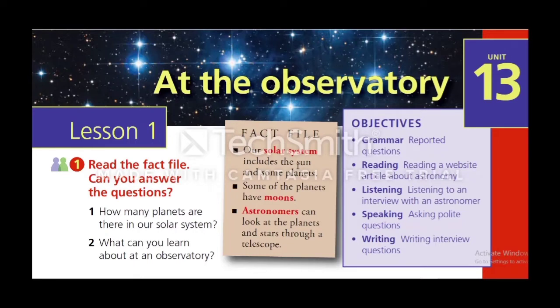The fact file: our solar system includes the sun and some planets. Some of the planets have moons. Astronomers can look at the planets and stars through a telescope, of course at the observatory.